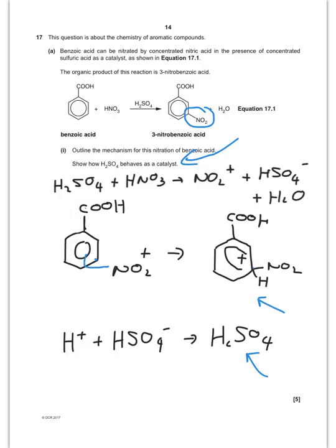So let's just do the mechanism. So first of all, the electrons are going to come out of the delocalised structure to attack the NO2 plus group. Then the hydrogen carbon bond is going to break to go back to give you your product plus H+.